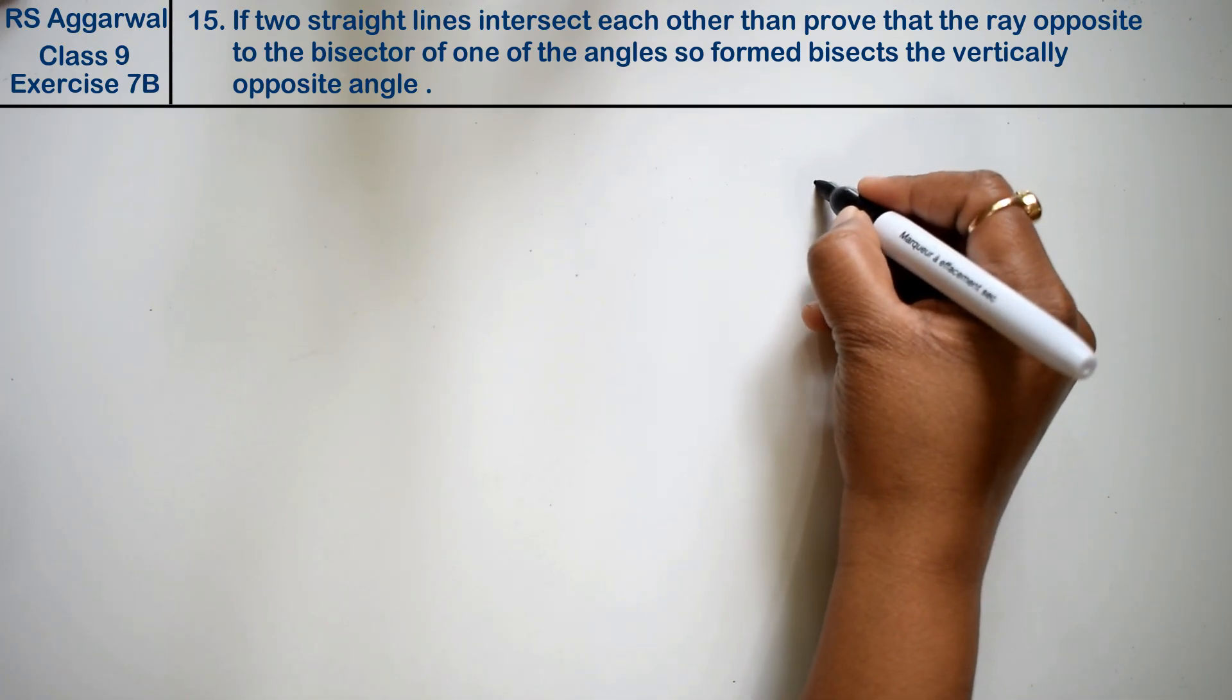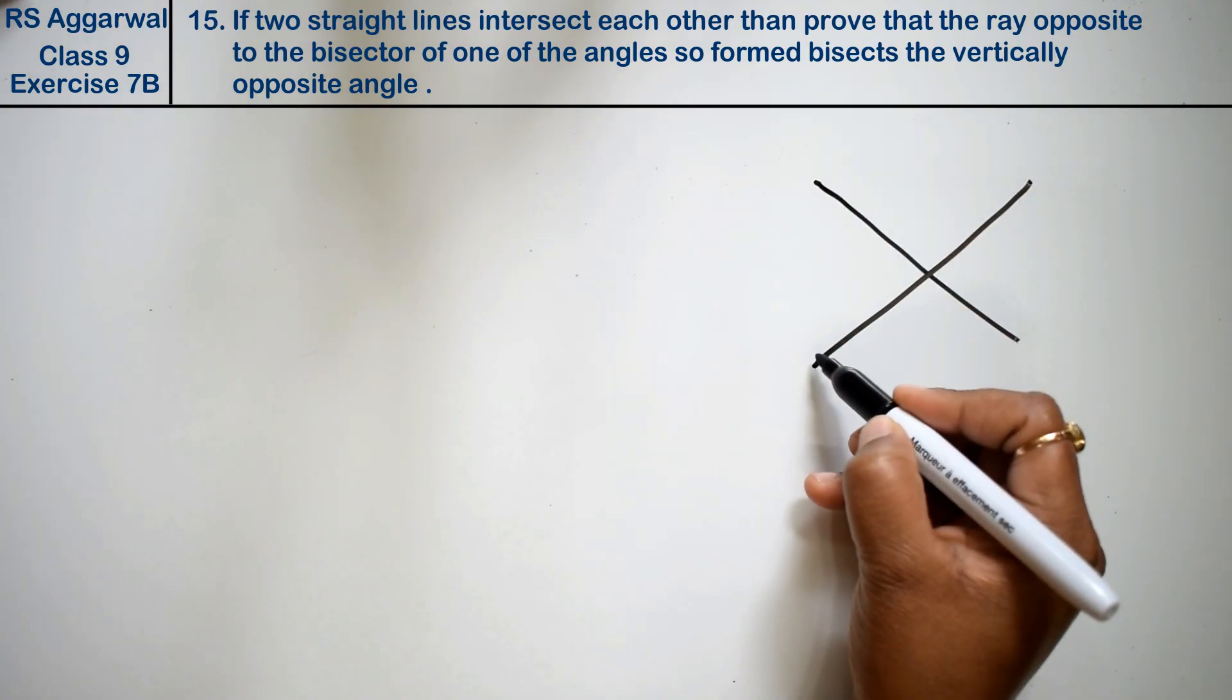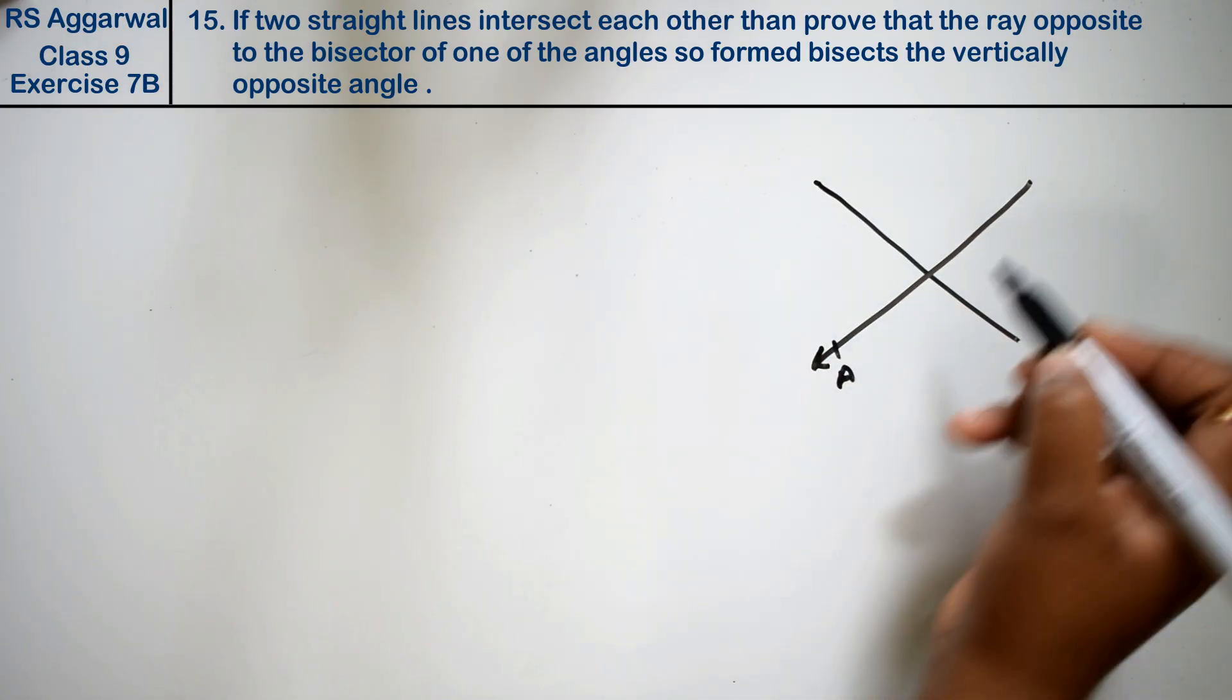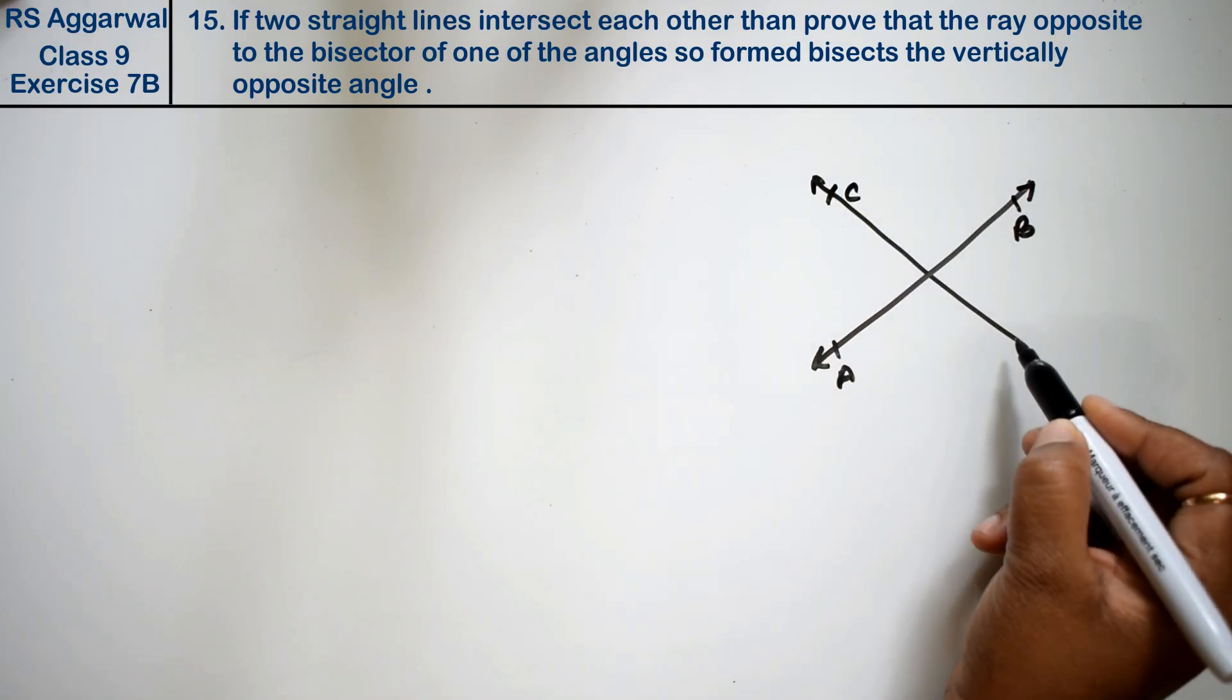First, let's draw the figure. Two lines intersecting - this is AB, and this is CD.